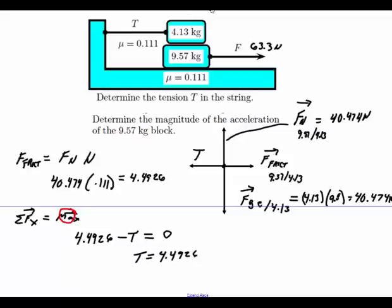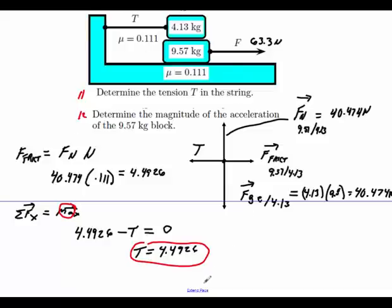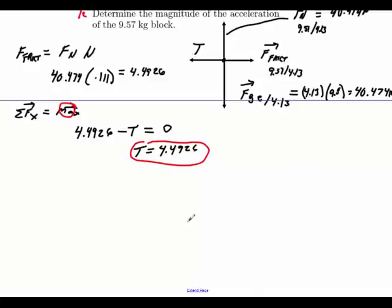Alright, so that's how you're going to get the answer to part 11. Now part 12 asks you, so this is 11 here, this is 12. 12 says determine the magnitude of acceleration at 9.57. Again, this all just comes back down to good free body diagrams or force diagrams.